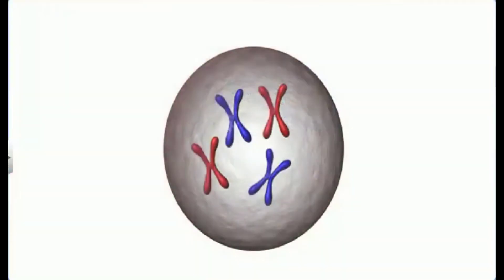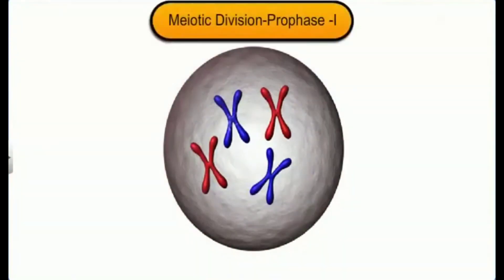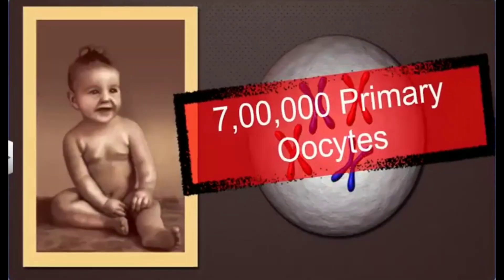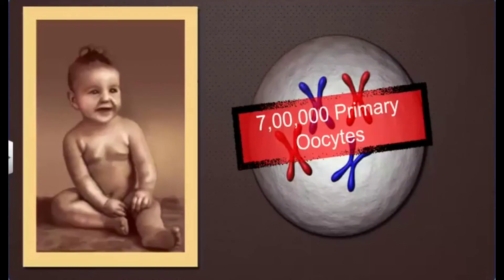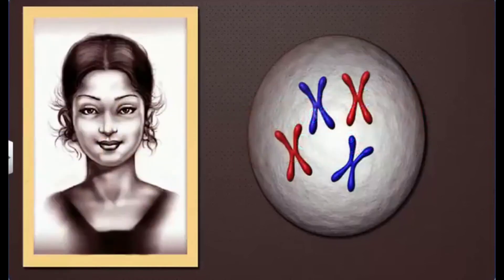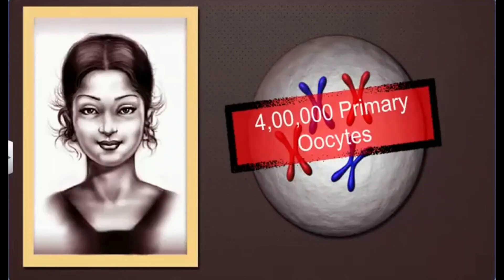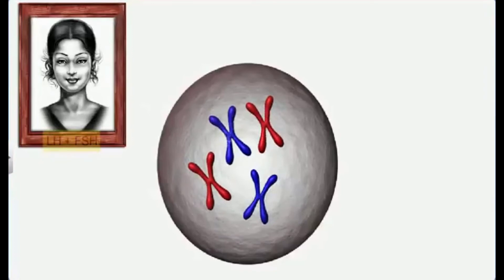The oocyte further develops as the fetus develops, but the granulosa cells do not change till puberty. In fact, primary oocytes enter the prophase of meiotic division and remain suspended till puberty. Did you know that at birth, a woman has approximately seven lakh oocytes? No oocytes are formed after birth, and by puberty most of the primary oocytes degenerate, leaving only four lakh in the ovary.